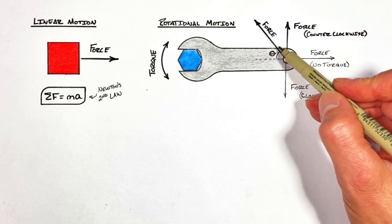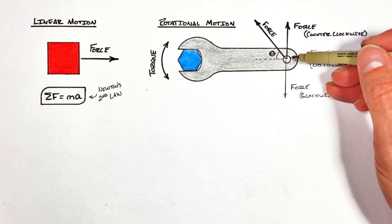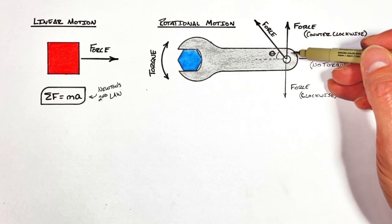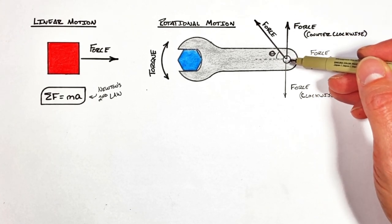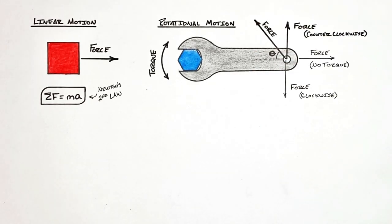some of this force, or really you could say a component of the force, is acting much like this original force did, tangent or at a right angle to the wrench, causing the wrench to rotate counterclockwise.